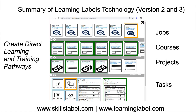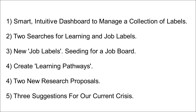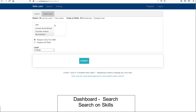First, there's a new dashboard used throughout the application to manage collections of job and learning labels. There are two searches — one for context and the other on skills. There are new job labels and seedings for a job board. You can create learning pathways to connect jobs all the way down to the tasks. There are two new research proposals on top of the two mentioned in January, and there are three suggestions for the crisis we're in.